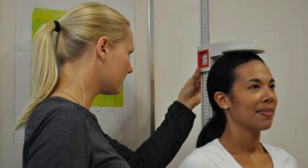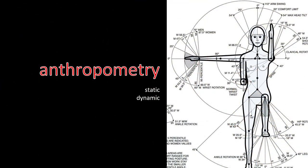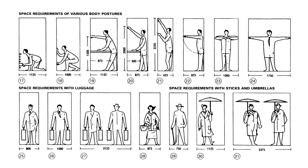So we have static and dynamic anthropometry. We have static and dynamic anthropometrics. Static being what are the measurements of a person as they're standing still or as they're not moving.